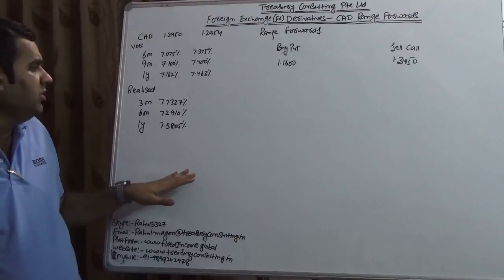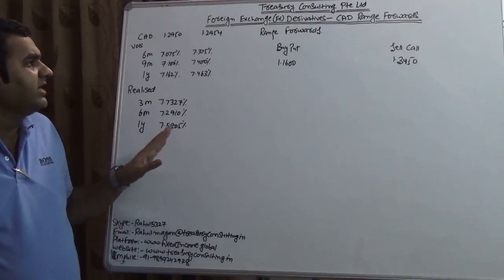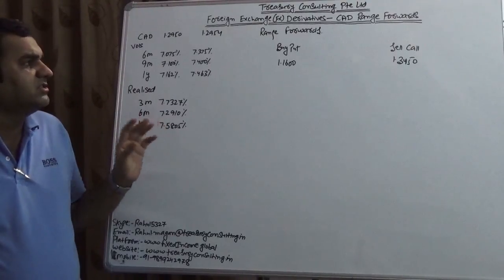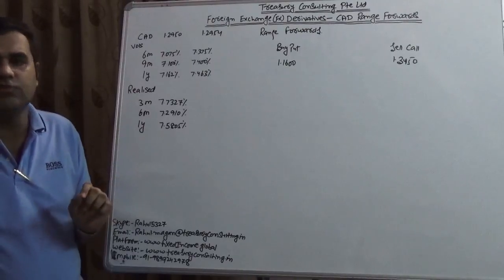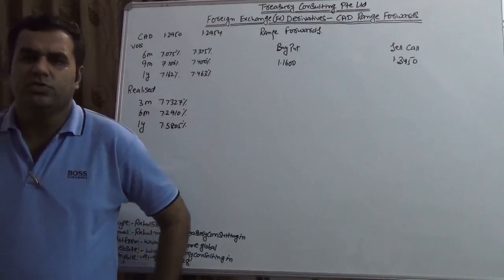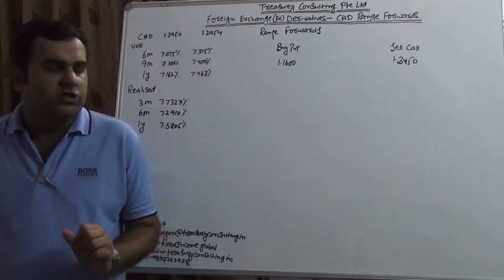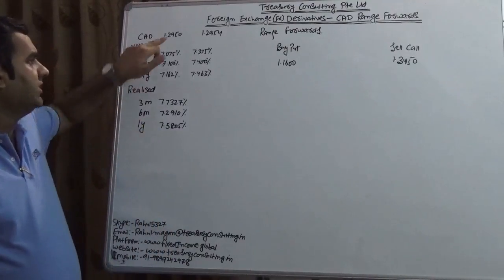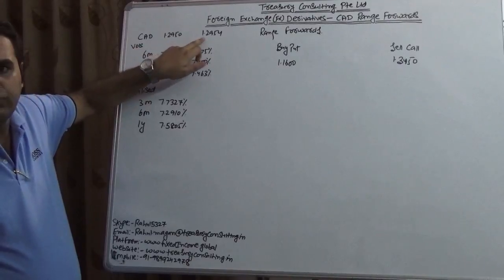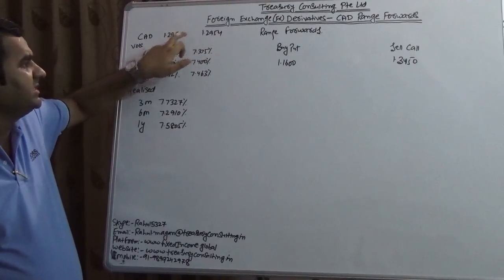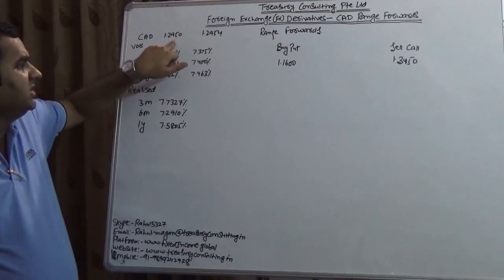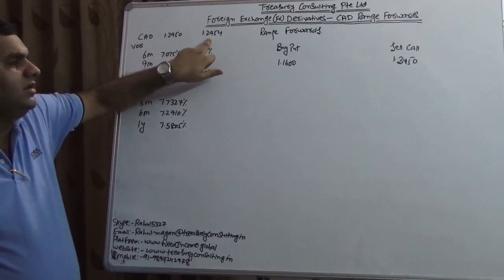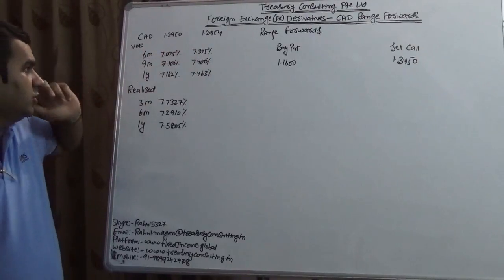Now in this video we are going to talk about foreign exchange derivative CAD range forward, Canadian dollar range forward. At the time of shooting this video, the CAD spot was 1.2950 and 1.2954, which is the bid and the ask. This is at which you will sell the dollars and this is at which you will buy the dollars.